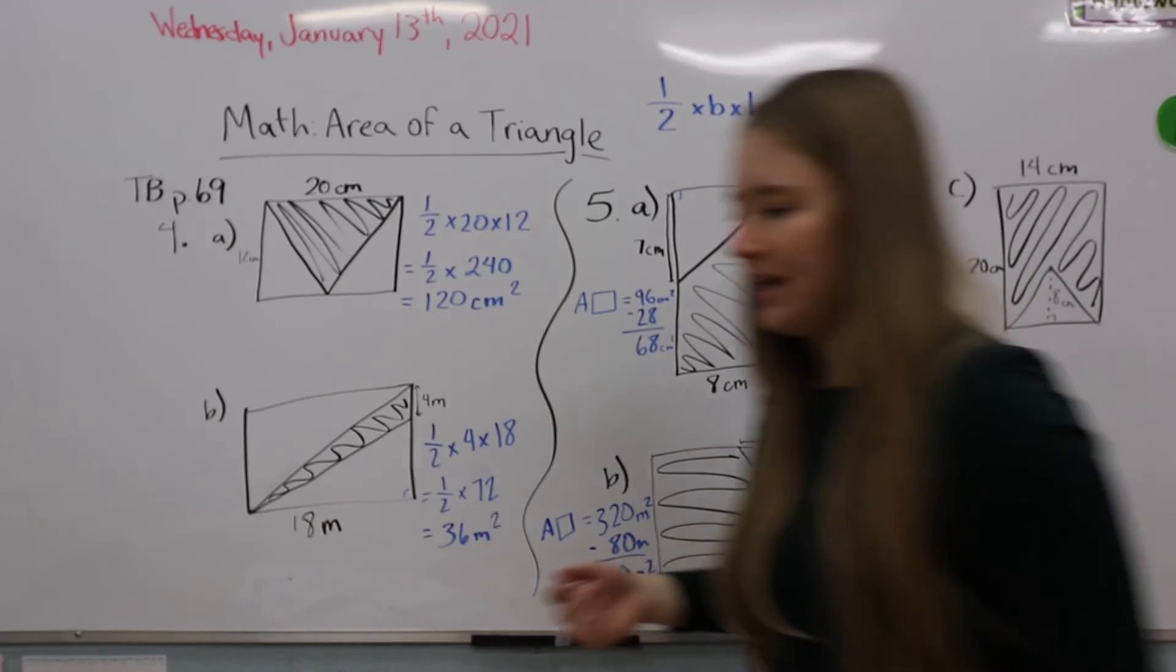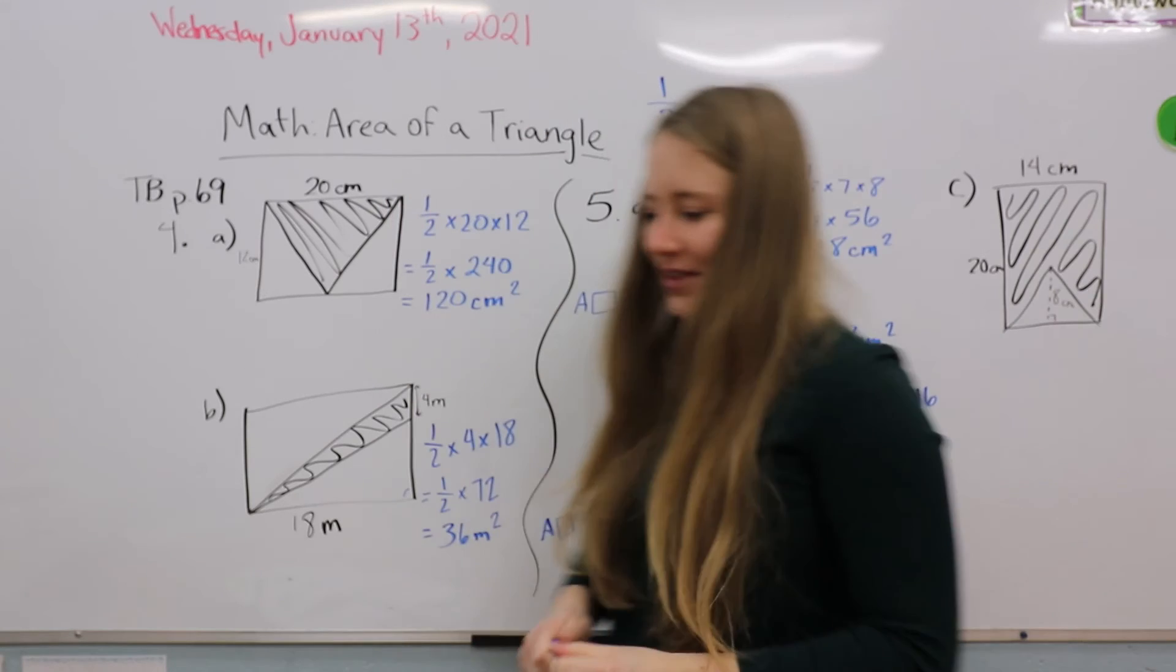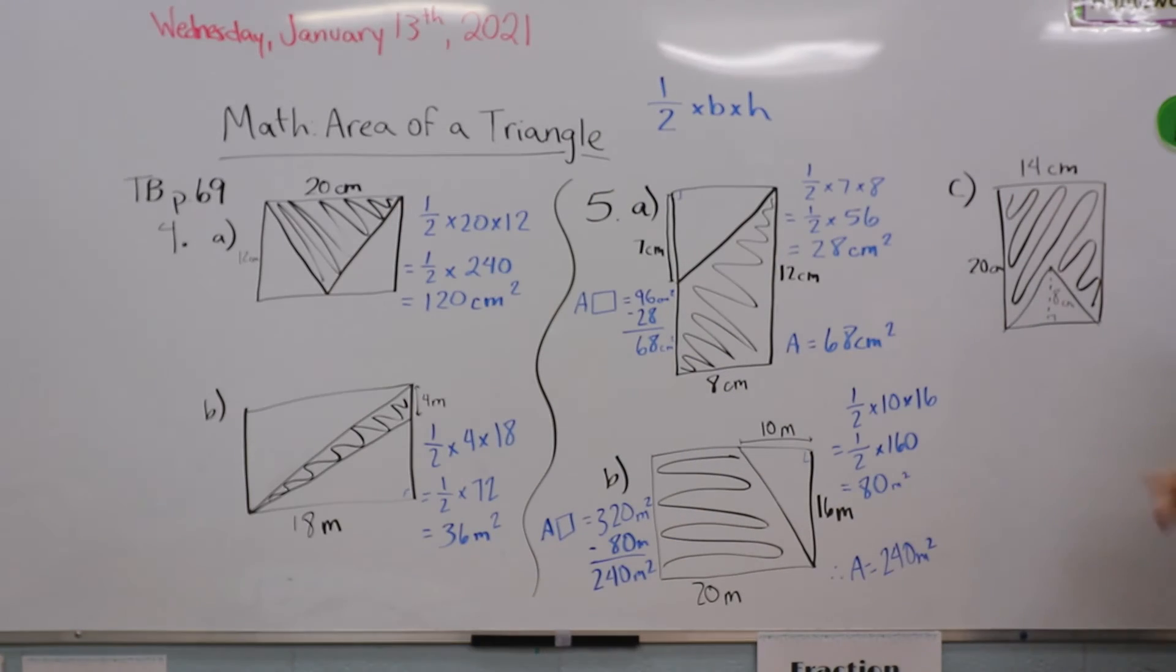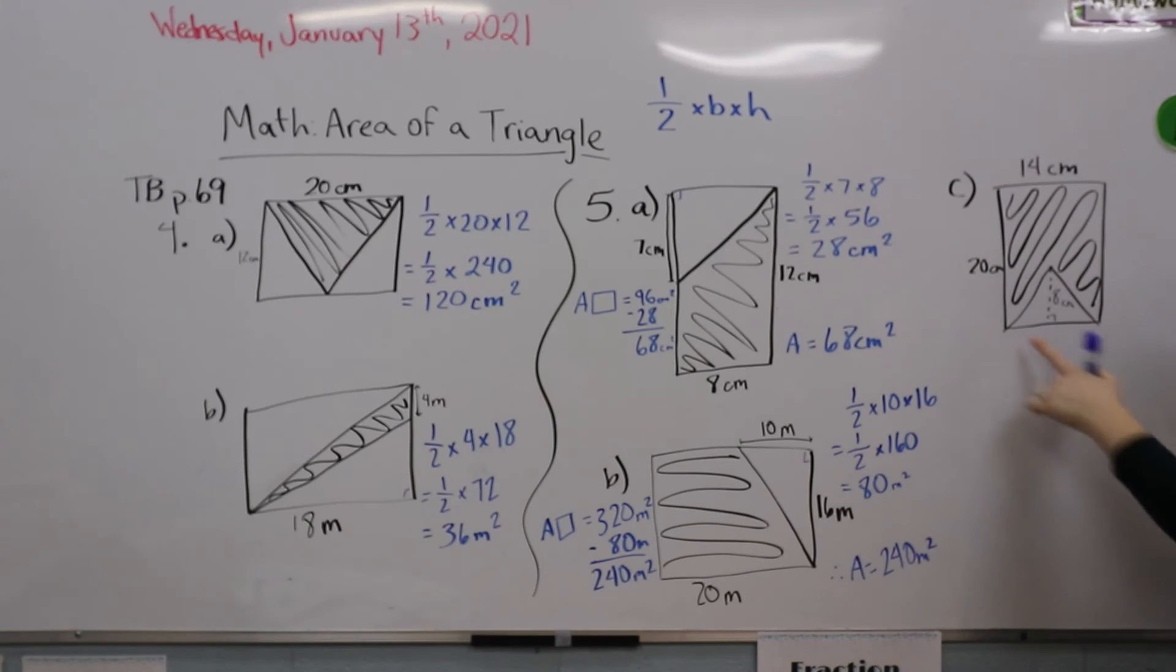All right, and the third one. This triangle is shaped different, but not to worry because they gave us the height, which is 8 centimeters, and we'll use this as our base because you know that this is the same as this down here. Let's get our rectangle out of the way.